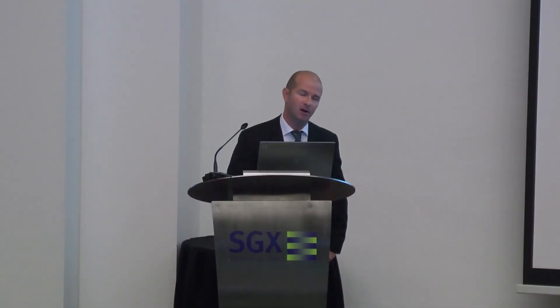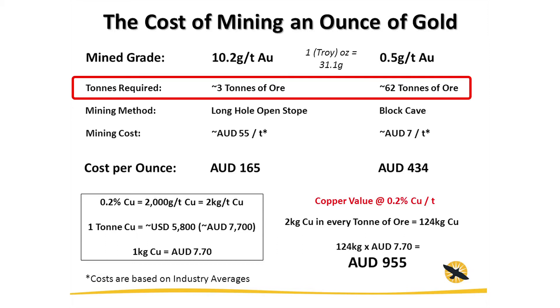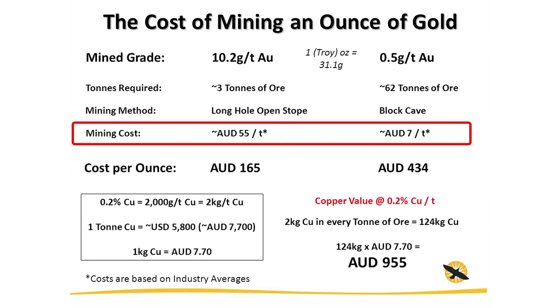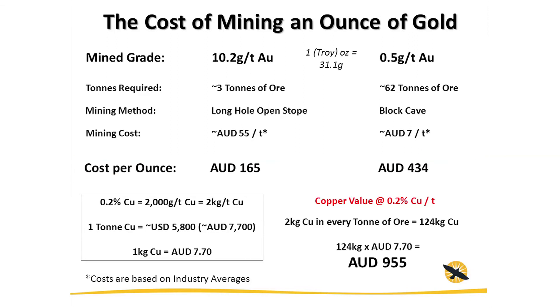So what we're going to do now is hypothetically mine an ounce out of each of those deposits. Pick which one you think you can do cheapest — do you want the high-grade or the low-grade deposit? A troy ounce is 31.1 grams. So the tonnes required from the high-grade deposit is only three, but from the low-grade deposit we need 62 tonnes of ore. Different mining methods have different costs — $55 a tonne for the high-grade deposit, versus only $7 for the block cave. However, because of the volume of tonnes, we're producing an ounce at the high-grade small mine for only $165, whereas at the low-grade mine it's costing us over double that. So those of you thinking you'd rather mine the high-grade deposit — hold that thought, because we haven't put the copper in yet.